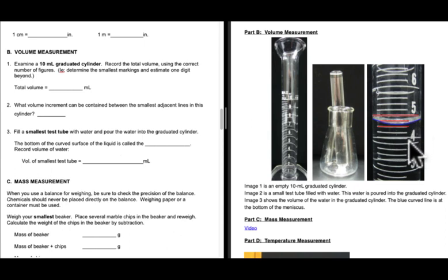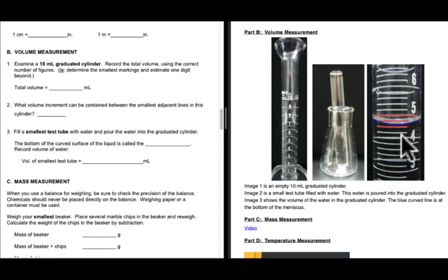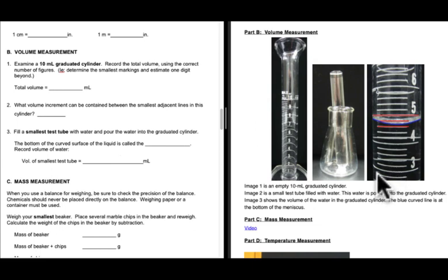Just do your best in terms of estimating the last digit, because each mark on the 10 milliliter graduated cylinder is about 0.2 milliliters. Going to the tenths position is totally fine for the 10 milliliter graduated cylinder — that's fairly typical.